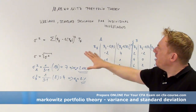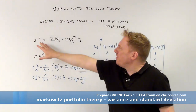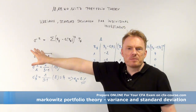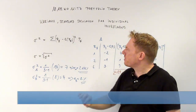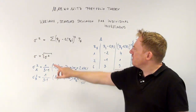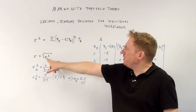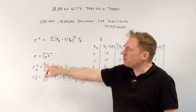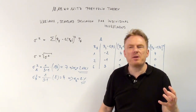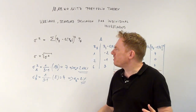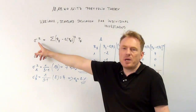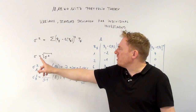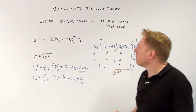This is the formula depicting variance, and if you compute the square root of variance you get standard deviation. So be careful about sigma squared or just sigma.